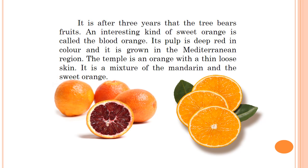Normally each plant has a different time duration to grow its fruit, so oranges are grown after three years. One type is blood orange — we all know the pulp of orange is orange in color, but the pulp of blood orange is deep red like blood, hence the name. It is grown in the Mediterranean region, which is the region around the Mediterranean Sea, consisting of countries like France, Portugal, Italy, Spain, and Greece. The temple orange is grown in Florida and is a mixture of mandarin and sweet orange, with a thin loose skin.